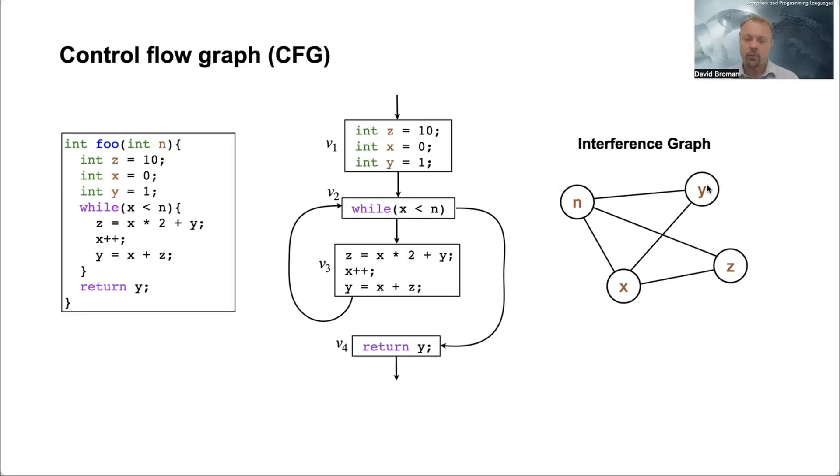This one where you have four variables: x, y, z, and n. These are the variables in the program. And they have interference in a way that everything is interfering with everything, but there is no interference between y and z.